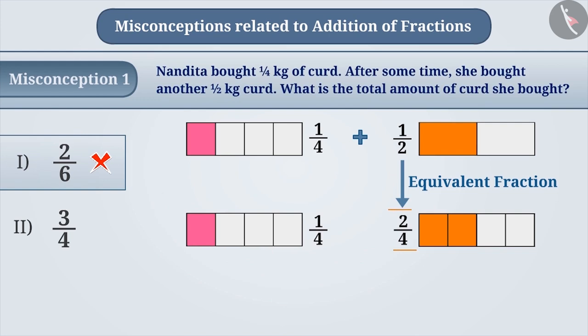So, we can add 1/4 and 2/4 directly. We will get 3 shaded parts by addition. Therefore, the sum of 1/4 and 1/2 is 3/4.